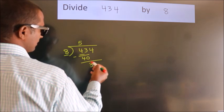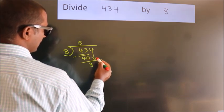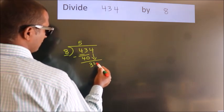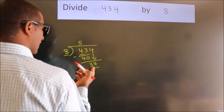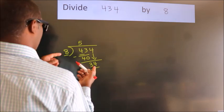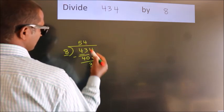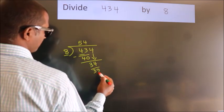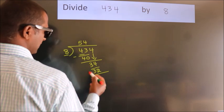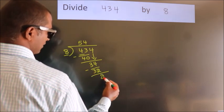After this, bring down the beside number. So, 4 down, so 34. A number close to 34 in the 8 table is 8 fives 32. Now we subtract, we get 2.